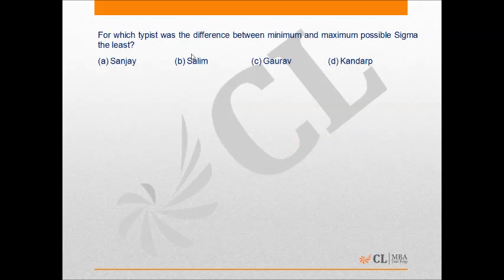For Question 4: for which typist was the absolute difference between minimum and maximum possible value of Sigma the least? As already computed, for Sanjay the minimum Sigma is 75 and the maximum is 75.5 — a difference of just 0.5, which is the smallest range among all typists. Therefore, Sanjay is the correct answer.